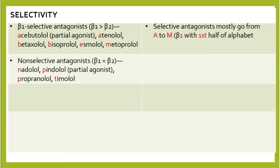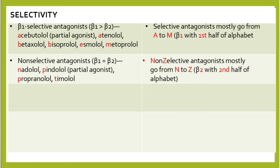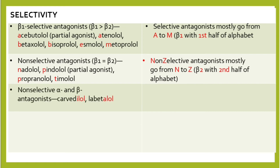Non-selective antagonists act on both beta-1 and beta-2 equally. Examples include nadolol, penbutolol — which is a partial agonist — propranolol, and timolol. To remember this: non-selective antagonists mostly go from N to Z, the second half of the alphabet.